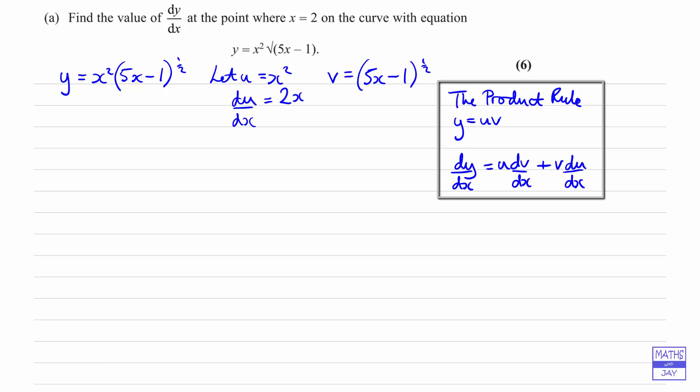And now we want to work out dv by dx. Well, it's really a function of a function. So what we need to use here is the chain rule. We use the chain rule in an example like we've got here, when v is a function of something which is a function of x. So we can use the letter w, for example, so that if v is a function of w, where w is a function of x, then dv by dx will be dv by dw times dw by dx.